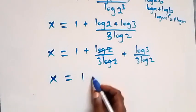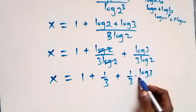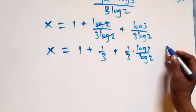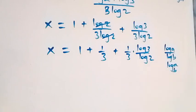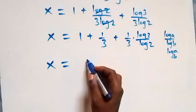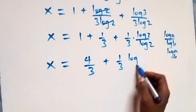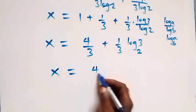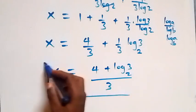We have x equals 1 plus 1 over 3 plus 1 over 3 times log 3 over log 2. Applying the change of base formula — log a over log b is the same as log a to base b — then 1 plus 1 over 3 simplifies to 4 over 3, and we get x equals 4 over 3 plus 1 over 3 times log 3 base 2.